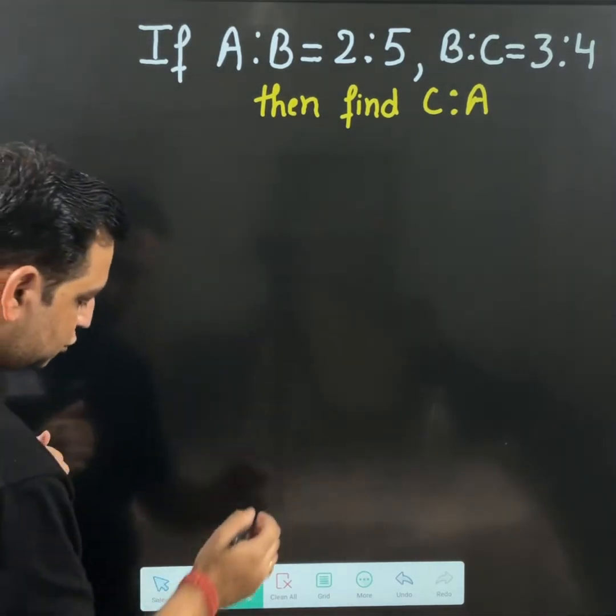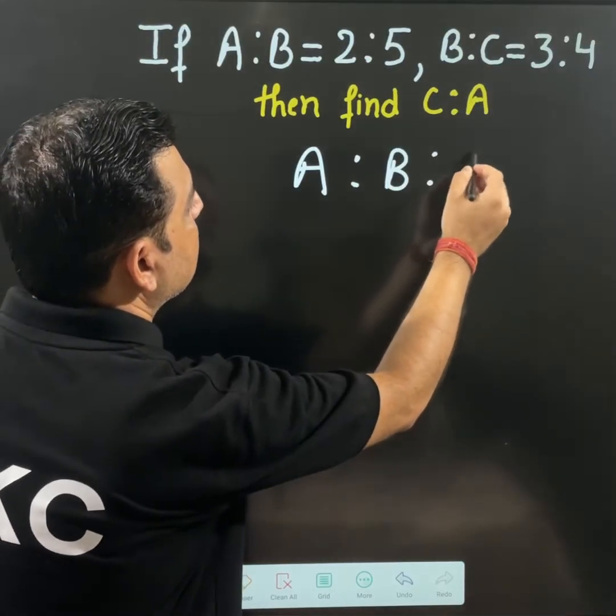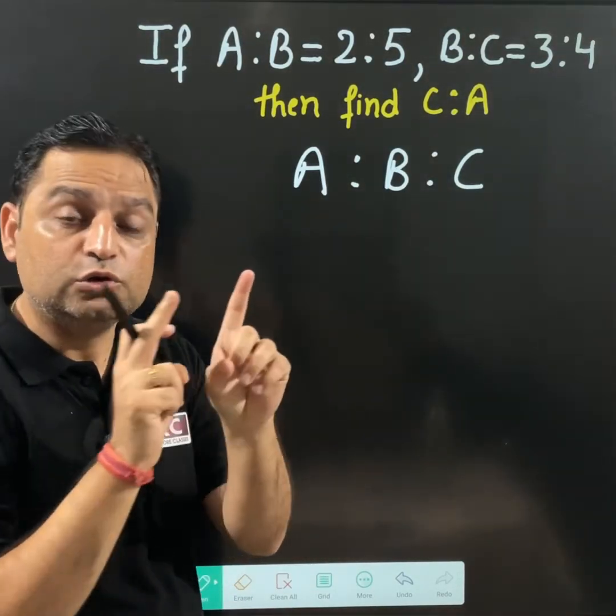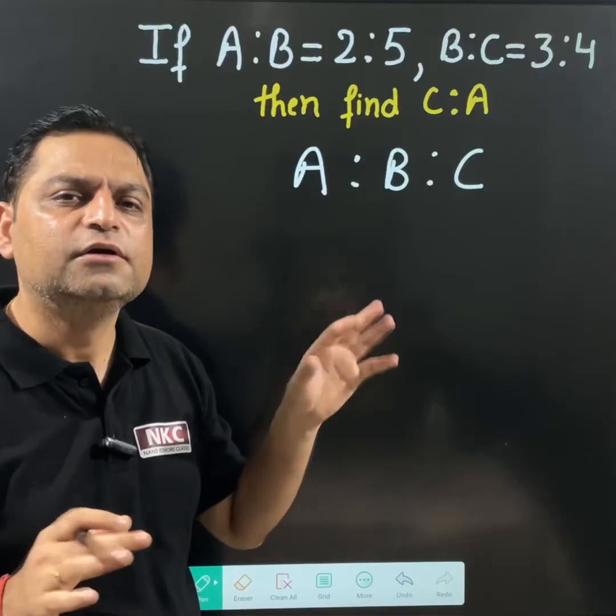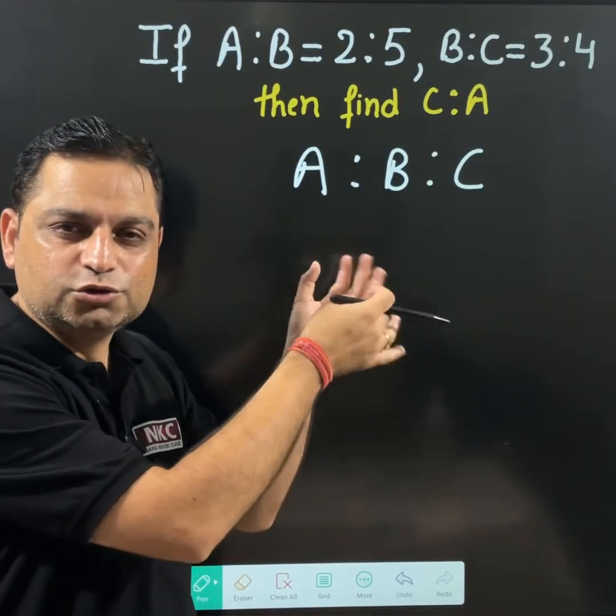Firstly you should write A ratio B ratio C. This is a rough work we are doing. Do keep it in mind. It is a rough work because usually in competitive exams you will get 4 options also. No need to show this task to anybody.